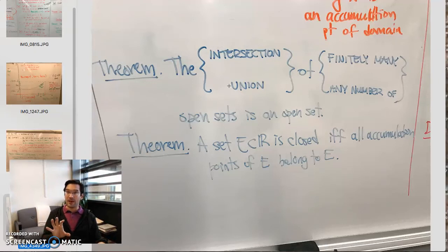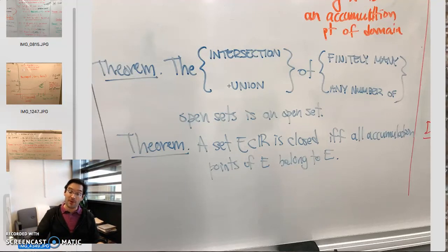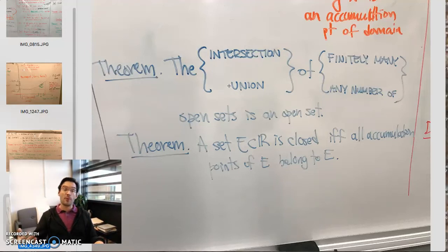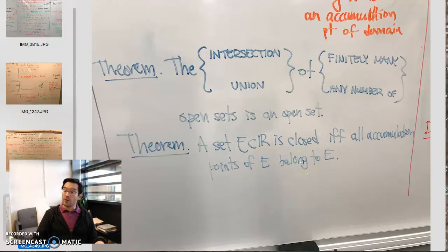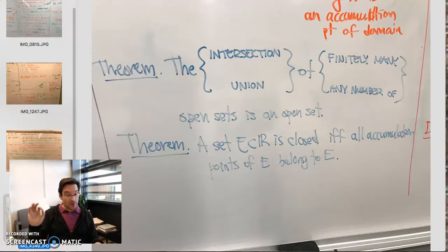In the context of a point-set topology class, this theorem is actually intrinsic to the definition of openness itself. For us, since we've defined openness in a particular way, we take it as a theorem instead. A second theorem relates to closeness: an alternate definition of a closed set is one which contains all of its accumulation points. Accumulation points of a set can come from outside the set, but if all accumulation points of E come from within E, then E is called closed.